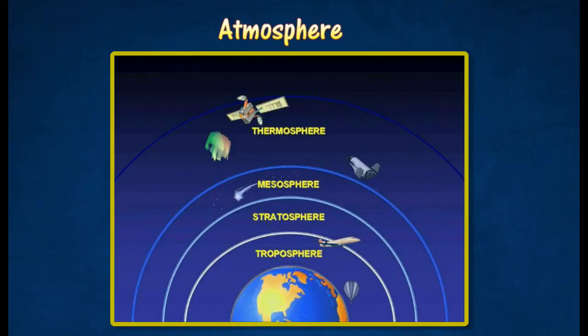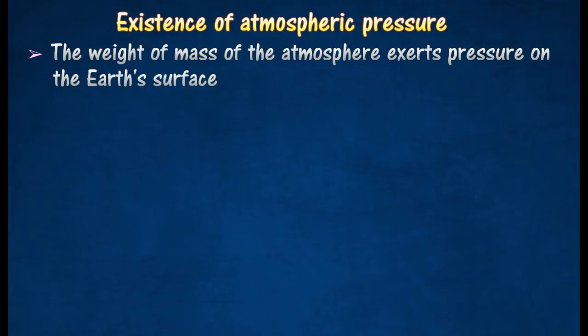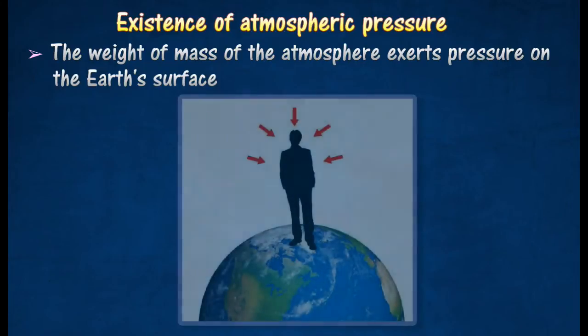It extends up to 1,000 kilometers above Earth's surface and has a total mass of about 5 million billion tons. The weight of the atmosphere exerts pressure on the surface of Earth and on everything on Earth. This pressure is called atmospheric pressure.